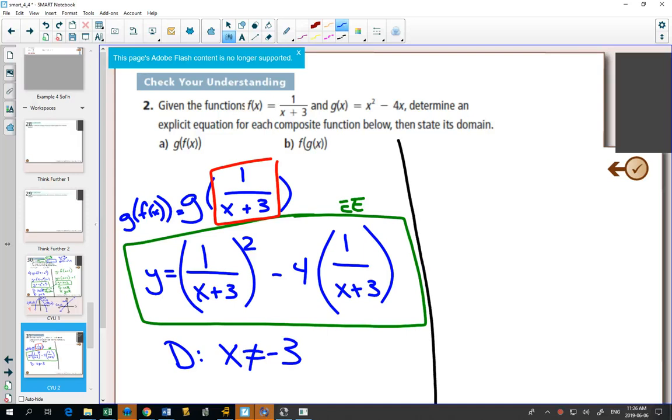So in part b, f of g of x, do the inside first, would be f of x squared minus 4x.